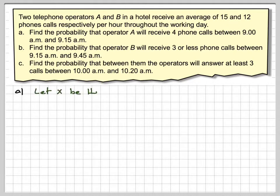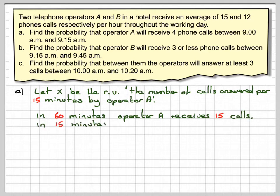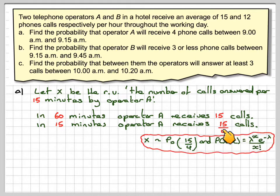Let X be the random variable, the number of calls answered per 15 minutes by operator A. We know that in 60 minutes operator A receives 15 calls, and therefore in 15 minutes he receives 15 divided by 4 calls because the time period has been reduced by 4.